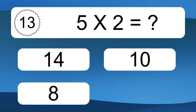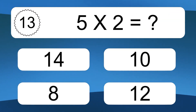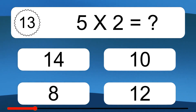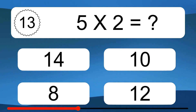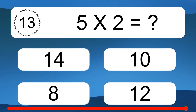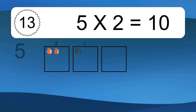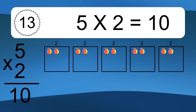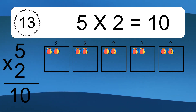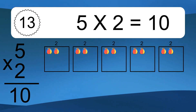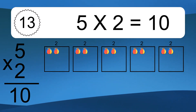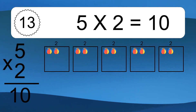Five times two equals what? Five times two equals ten. We have five boxes, and each box has two colorful balls inside. If you count all the balls in all the boxes together, you will have five times two balls. This equals ten balls.